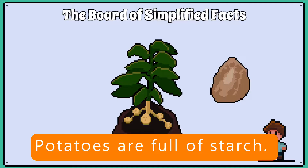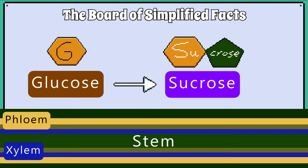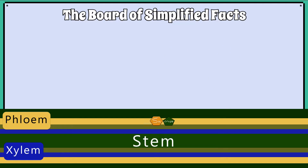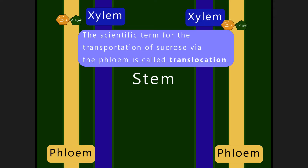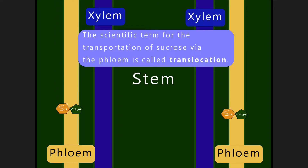Potato plants, for example, send a lot of glucose into the tuber underground where it is converted to starch. However, evidence suggests that in most plants the glucose is converted into sucrose before it enters the phloem. We often refer to where the sucrose is made as the source, which is the leaf, and what receives the sucrose as the sink. The scientific term for the transportation of sucrose via the phloem is called translocation.